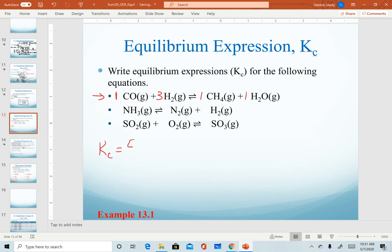For number one, remember that we are always writing as products over reactants. And then our coefficients are the exponents. The only one that has a non-one exponent is our hydrogen, so hydrogen would be cubed. This is our equilibrium expression for the first equation. I encourage you to practice numbers two and three, balancing and writing your expressions.